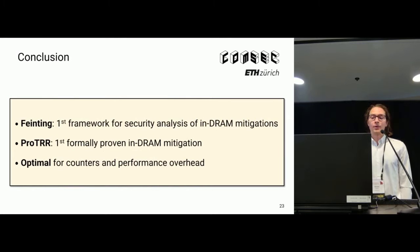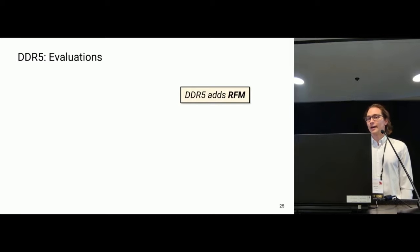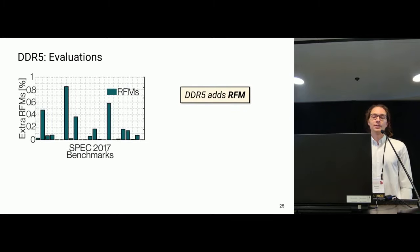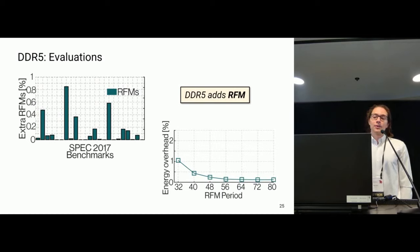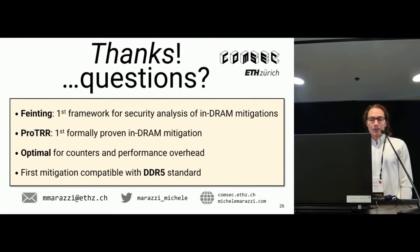To conclude, we showed fainting as the first framework for security analysis of in-DRAM mitigations, the first formally proven in-DRAM mitigation, and optimality for counters and performance overhead. We also did all of this for DDR5. DDR5 adds a new command called RFM, which gives the device more time to perform extra refresh operations. We benchmarked SPEC 2017 analyzing extra RFM commands sent and evaluated the energy overhead depending on the RFM period. We showed and proved the first mitigation compatible with DDR5 standards.